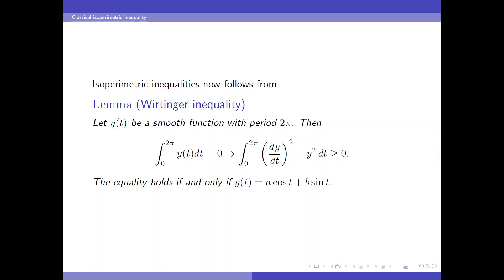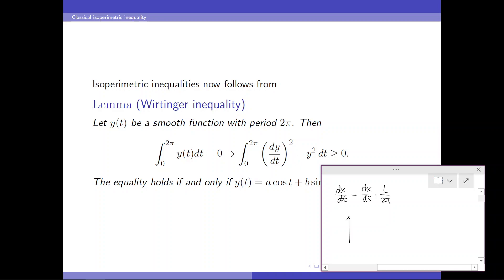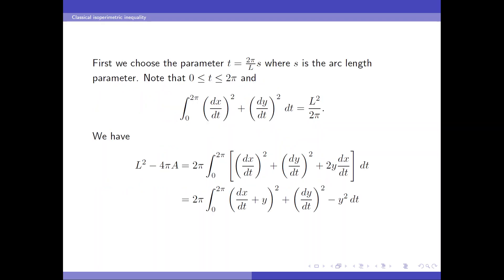We know that the assumption is met by a suitable translation of the curve. Suppose initially the curve lies here. Then we translate it so that the average of its y-coordinate is 0. So for the equality case, once we know that y is the linear combination of cosine and sine, then x is also a linear combination of sine and cosine. And from there, we know that it's a circle.